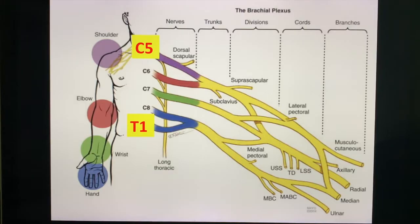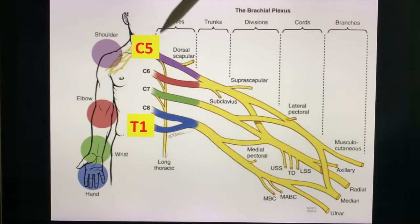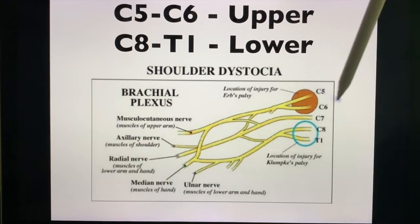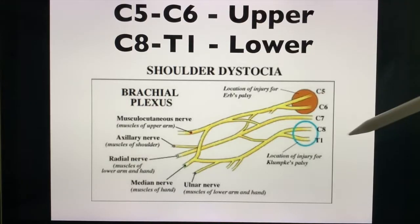Most students would memorize the entire brachial plexus. If you're preparing for an exam and need final tips, simply remind yourself that the brachial plexus starts at cervical five and ends at thoracic one. Also remember: C5 to C6 is considered the upper brachial plexus, while C8 to T1 is considered the lower brachial plexus.